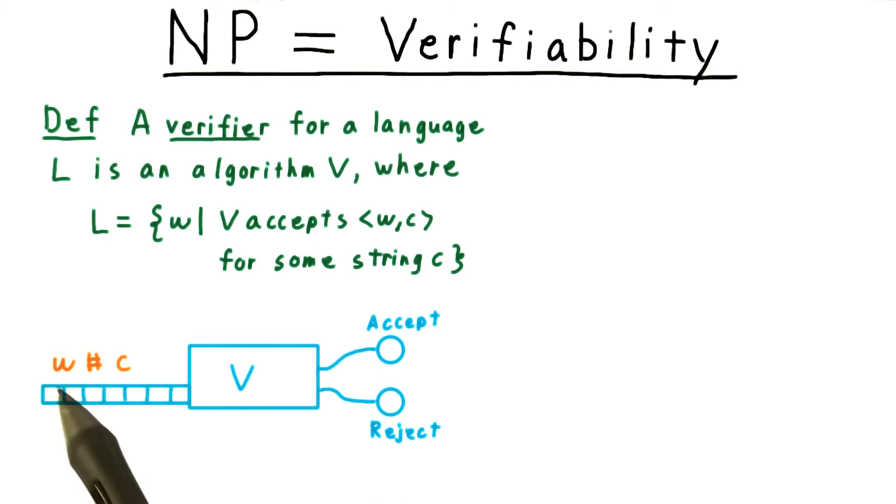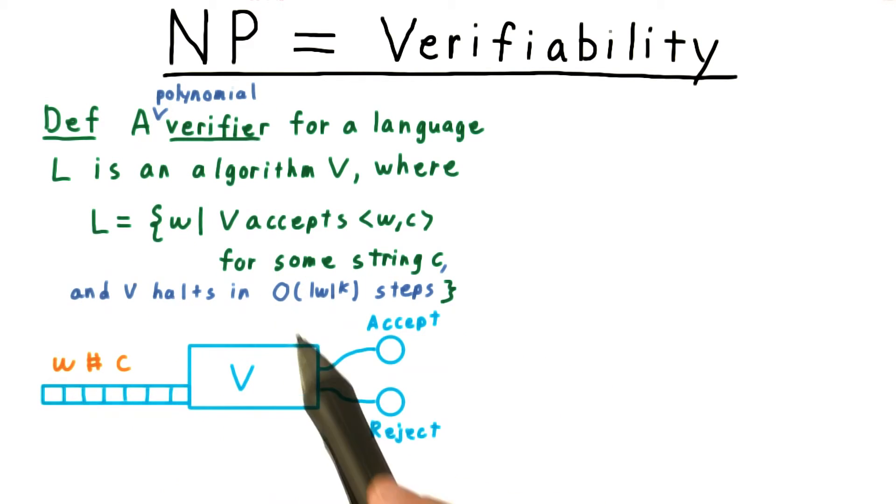It's intuitive to think of W as a statement and C as a proof. If the statement is true, then there should be a proof for it that the verifier V can check. On the other hand, if W is false, then no proof should be able to convince the verifier that it's true. A verifier is polynomial if its running time is bounded by a polynomial in the length of the string W.